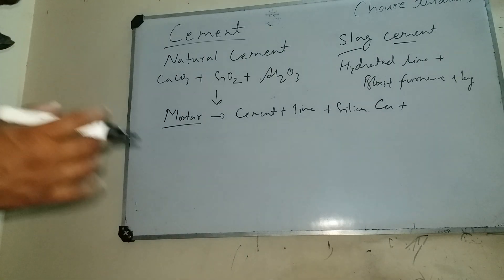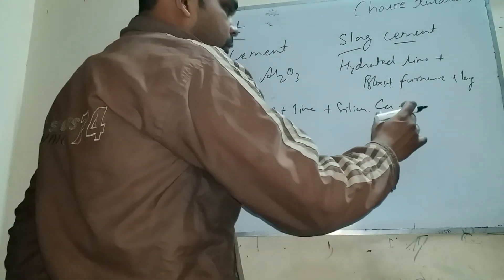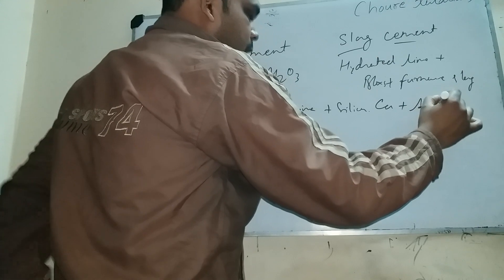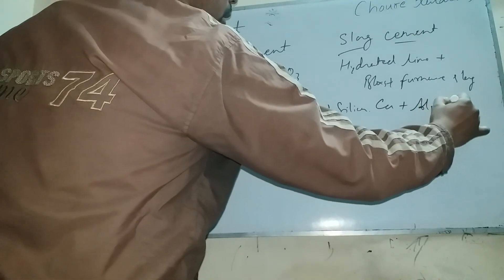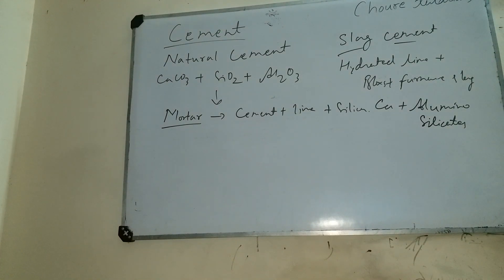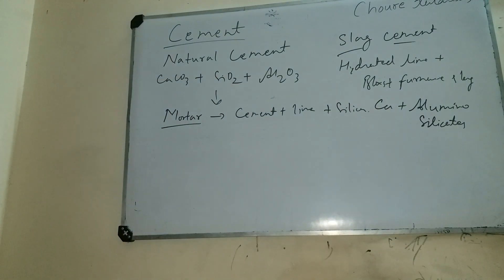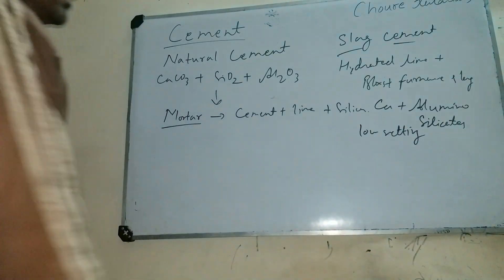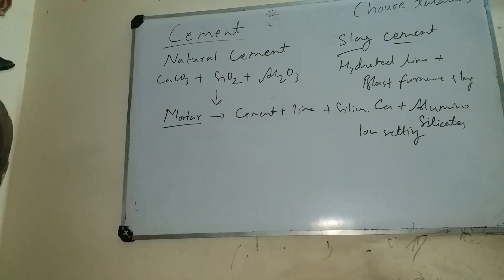Slag cement is a mixture of calcium and aluminum silicate obtained from a blast furnace. The slag cement is a low-setting cement, and its abrasion resistance is very poor. This is why its applications are very limited, and one of the applications is concrete.